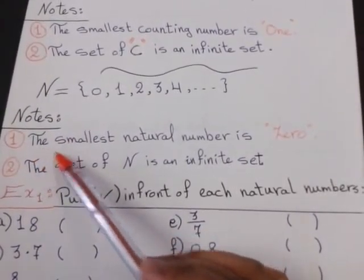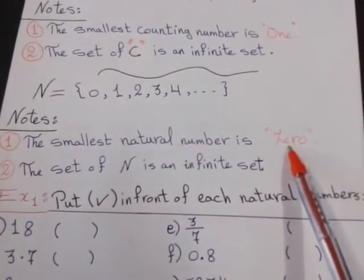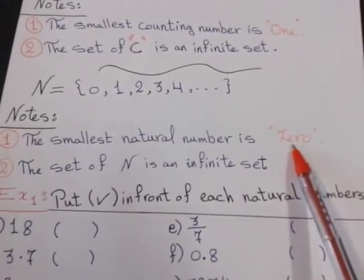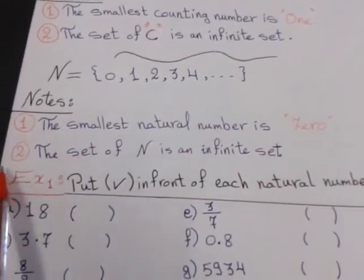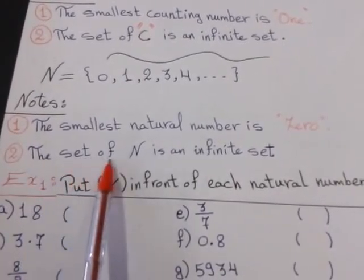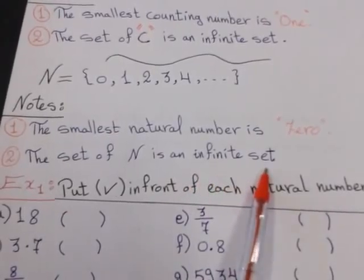The first one, the smallest natural number is 0. So, the smallest counting number is 1, but the smallest natural number is 0. Number 2, the set of natural numbers is an infinite set also.